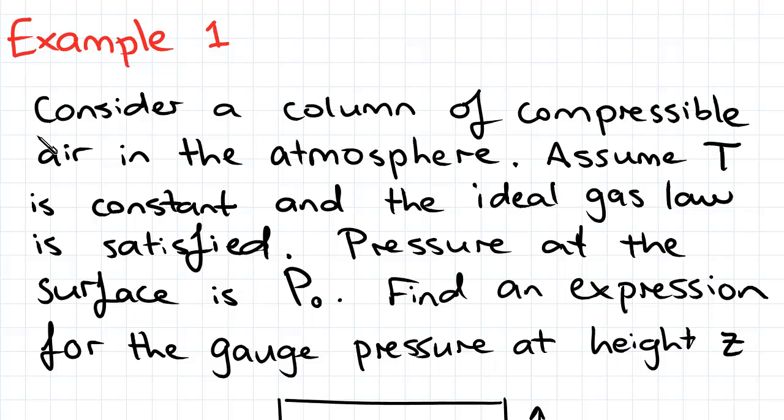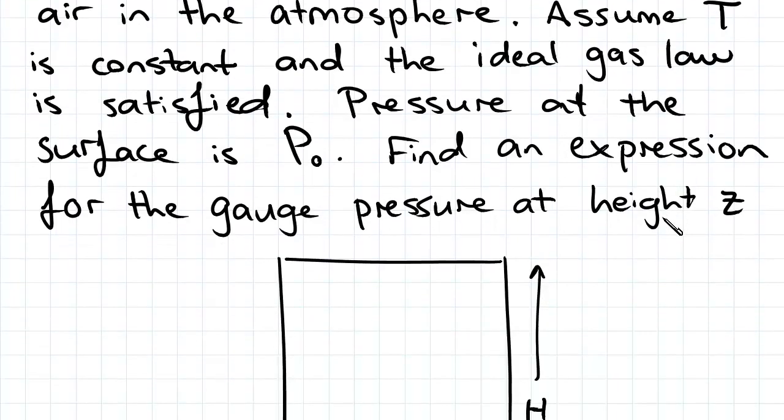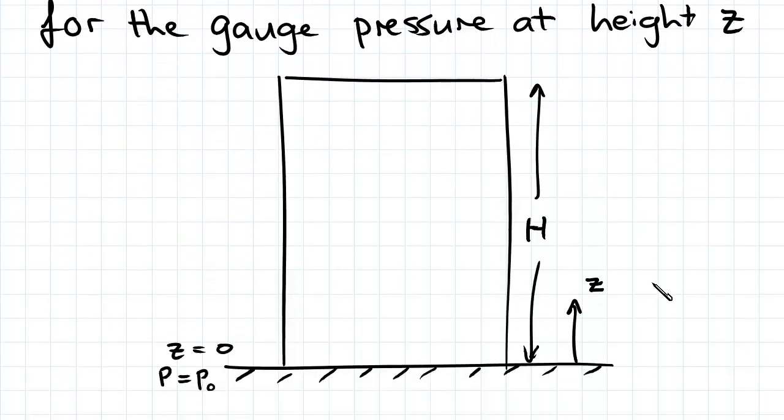Key word here is compressible. Since it's compressible, rho changes with height. We're told to assume that the temperature is constant and that the ideal gas law is satisfied, and the pressure at the surface is P0.